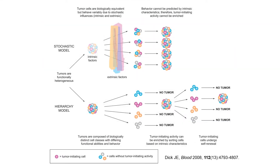Currently, two models have been proposed to explain the heterogeneous nature of tumor cells. The first is the stochastic model, which postulates that a small population of tumor cells acquires the appropriate mutations necessary to confer extensive proliferative capabilities. This capacity to become tumorigenic is equally probable for all tumor cells under this model. According to this model, cells in a particular tumor are mostly homogeneous and have an equal likelihood of unrestricted proliferation and initiating tumor formation.